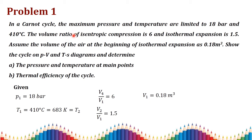The volume ratio of isentropic compression — that is v4 by v1 — is 6, and the volume ratio of isothermal expansion is 1.5. Isothermal expansion is process 1 to 2, so v2 by v1 = 1.5. The volume of air at the beginning of isothermal expansion, v1, is given as 0.18 cubic meters.